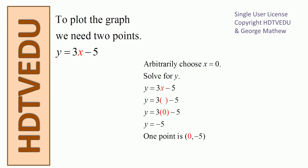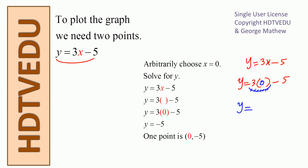To plot a straight line, all we need are two points. We have to generate those two points. Let's go for x equal to 0. So y is equal to 3x minus 5, and in the space occupied by x we substitute 0. y is equal to 3 times 0, which is 0, minus 5.